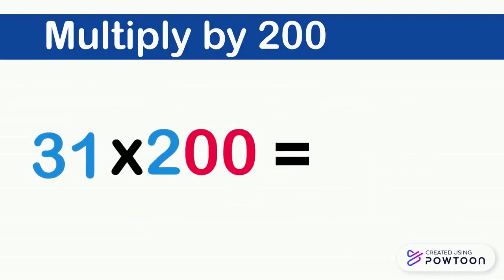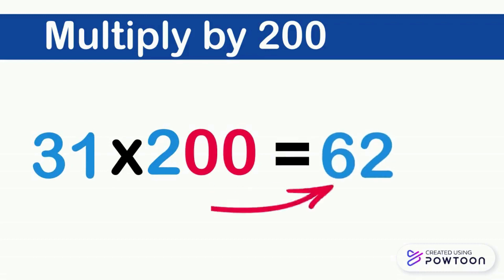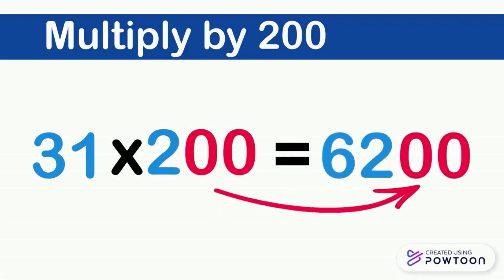31 times 200: first, we multiply 31 by 2, which is 62. Then we put two 0s to the right of 62. So 31 times 200 equals 6200.